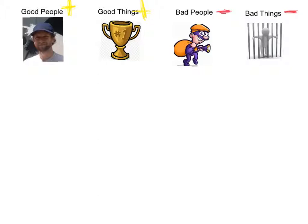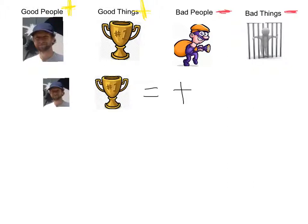So we could say if good things happen to good people — I totally circled bad things, didn't I? Well, if good things happen to good people, that's a good thing. So if good things happen to good people, that's a positive. Now, when bad things happen to good people, that's a negative.